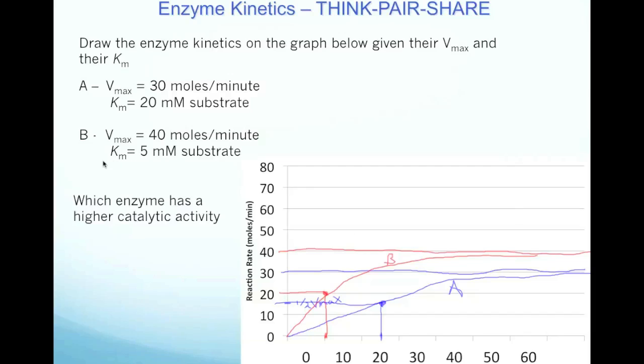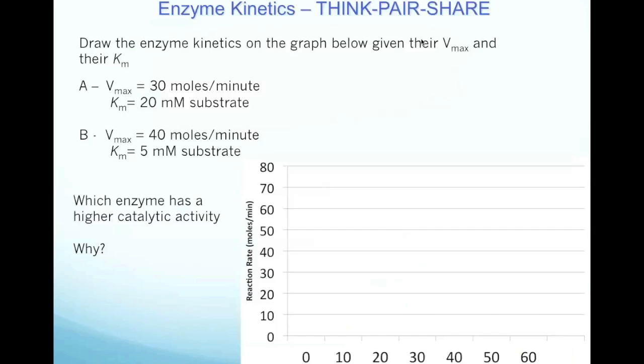The other parameter I gave you was Km, Michaelis constant. This tells you the affinity. Remember, Km is drawn up here so we don't forget.